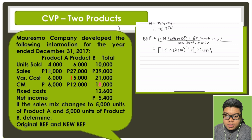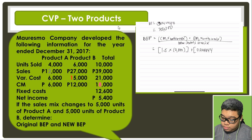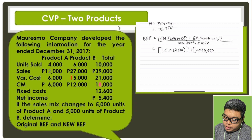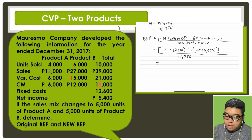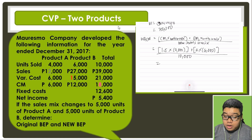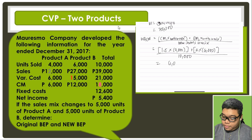Actually, the contribution margin for product B is 12,000 divided by 6,000 units, which equals 2. So multiplied by 6,000 over 10,000 units. Our weighted average contribution margin — this is the first weighted average contribution margin — would be 1.5 times 4,000, which is 6,000.